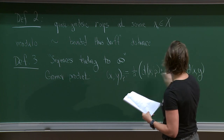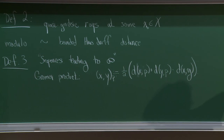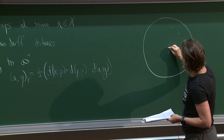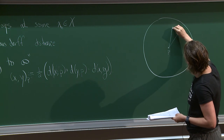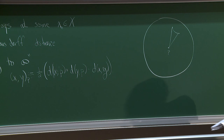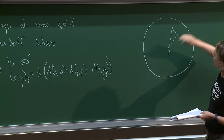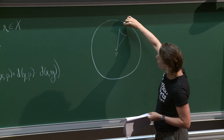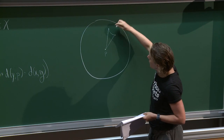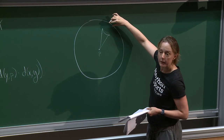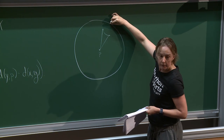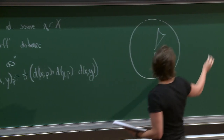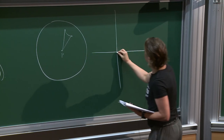Let's draw a picture of this. In hyperbolic space with some basepoint p and two points x and y, we compute the distance from x to p, plus y to p, minus the distance between them. When x and y get far away, this Gromov product goes to infinity. If they're going to the same point — if these are points along rays staying within bounded Hausdorff distance — way out there they're going to look the same, and this goes to infinity.